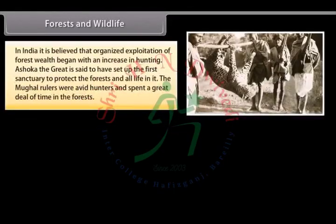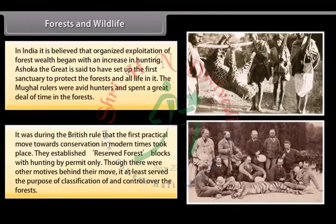In India, organized exploitation of forest wealth began with an increase in hunting. Ashoka the Great is said to have set up the first sanctuary to protect the forests and all life in it. The Mughal rulers were avid hunters and spent a great deal of time in the forests. It was during British rule that the first practical move towards conservation in modern times took place — they established reserved forest blocks with hunting by permit only, serving the purpose of classification of and control over the forests.